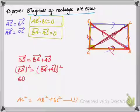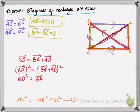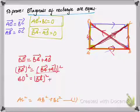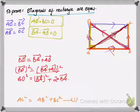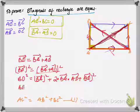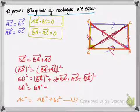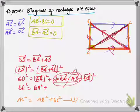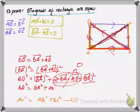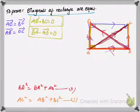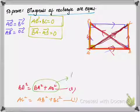So BD squared — I can write the magnitude of BD and then square it. Again using the formula (a + b)² = a² + 2ab + b², BD² equals the square of magnitude of BA plus twice BA dot AD plus AD squared. Since BA and AD are perpendicular vectors, their dot product is simply equal to zero. So BD² = BA² + AD². This is our second equation.